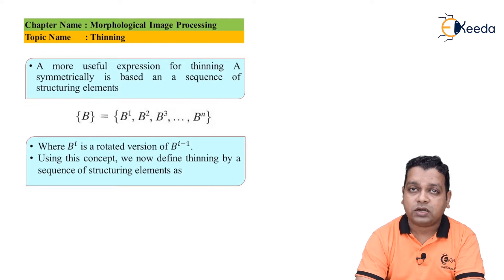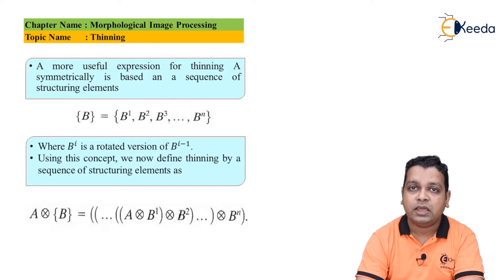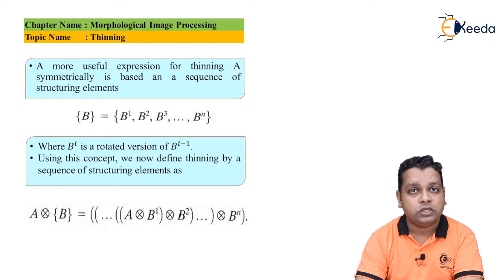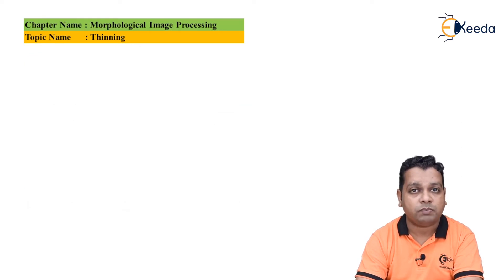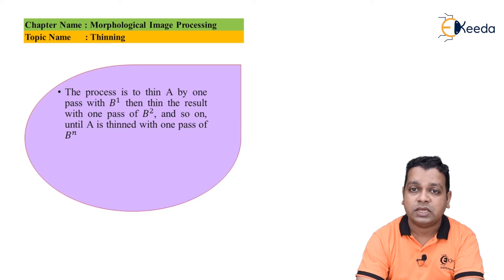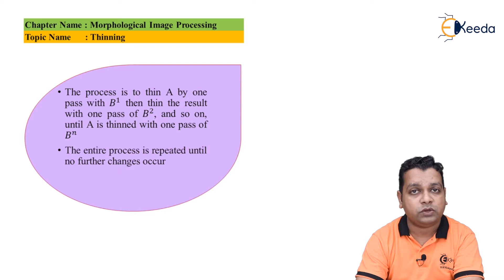B to the power i is a rotated version of B to the power i minus 1. Using this concept, we define the thinning procedure by the sequence of structuring elements: A thinned by B is obtained by first thinning A by B to the power 1, then thinning the result by B to the power 2, and further thinning by B to the power 3. This process continues up to the last structuring element B to the power n. The process is to thin A by one pass with B1, then the result with B to the power 2, and so on until A is thinned with one pass of B to the power n.